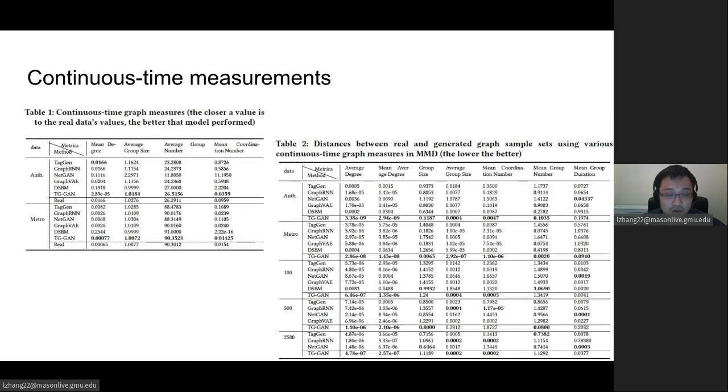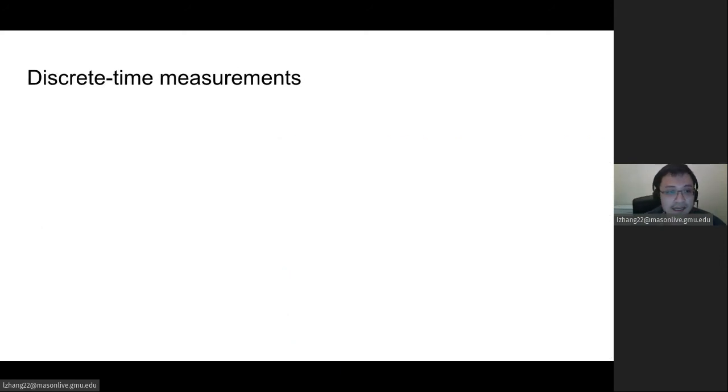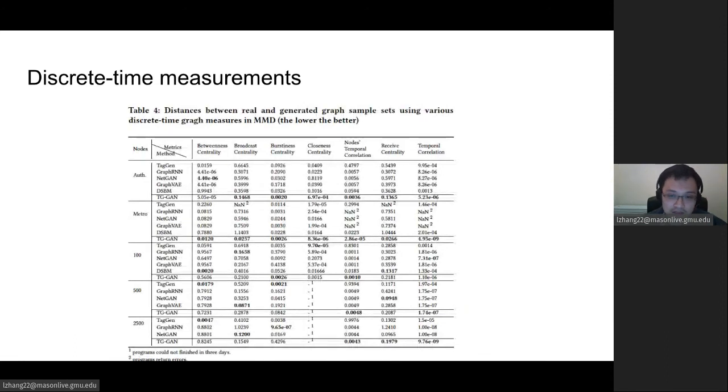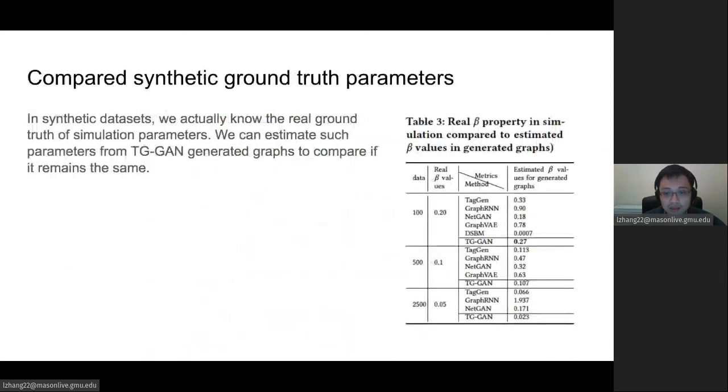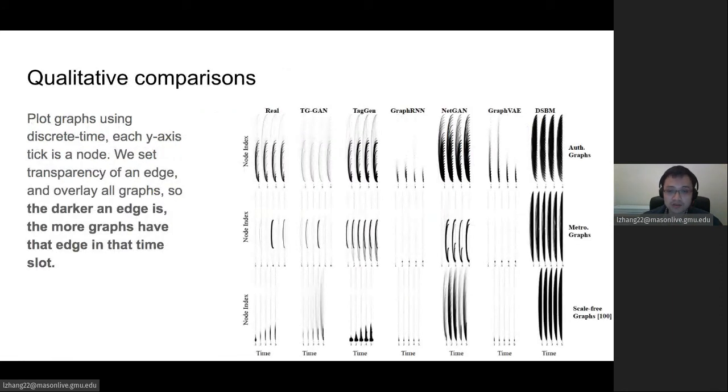For the continuous time measurement, as you can see, our TG-GAN achieved the best performance for most of the cases. Also for discrete time measurement, our TG-GAN also gets the best performance, which is the lowest MMD distance. Another thing we can do for the synthetic dataset is that we can estimate the parameters and compare with the ground truth in our simulations. For qualitative comparisons, as you can see, our methods also achieve very good similar properties.